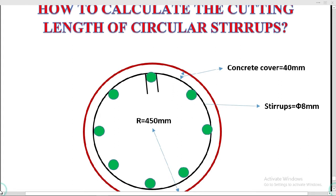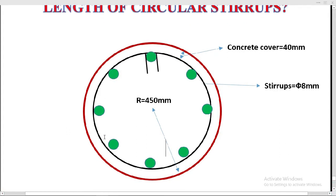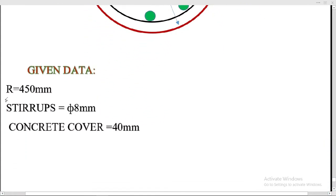Here is the column section given. You can see the longitudinal bars shown in green color in the section. The concrete cover provided in the column is 40 millimeters. These are the stirrups provided in circular form of 8 millimeter diameter, and the radius of the column is 450 millimeters from center to the outer side. Two hook lengths are provided at 135 degrees.